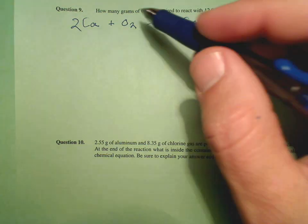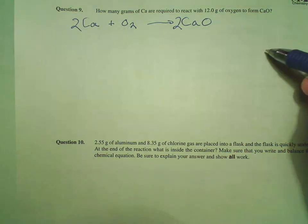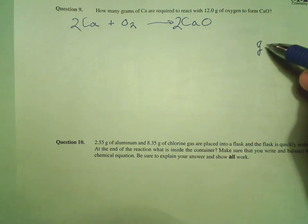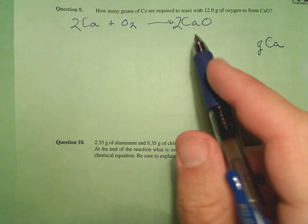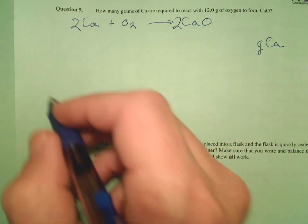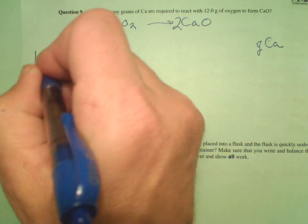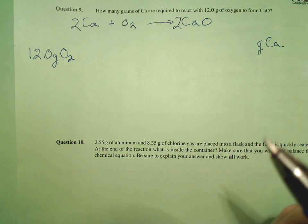So now, what are the units of our answer? How many grams of calcium? So I don't forget, I'm going to go ahead and put it over here, grams of calcium. I only have one place to start: 12 grams of oxygen. Start over here, 12.0 grams of oxygen.